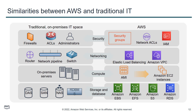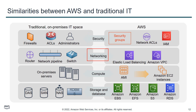Hello, so today we are going to start the topic: similarity between AWS and traditional IT. Here in the diagram you can see that on the right side we have AWS components, on the left side we have traditional on-premises IT components. We will compare security, networking, compute, storage and database facilities available in a traditional data center and AWS. So let us start.